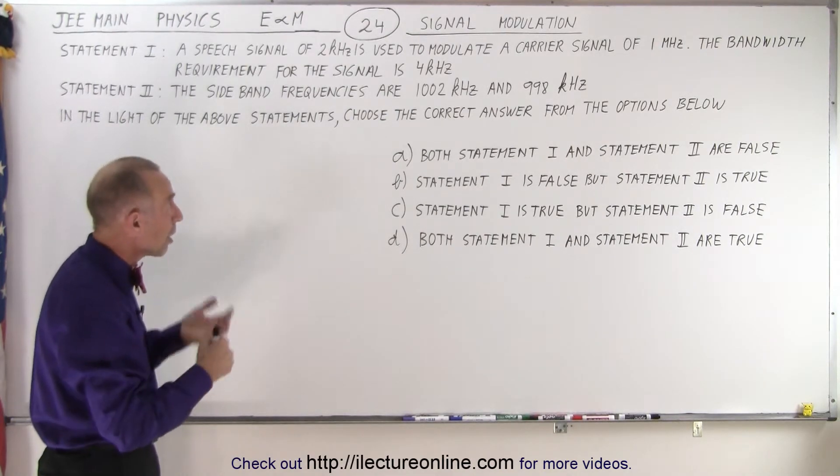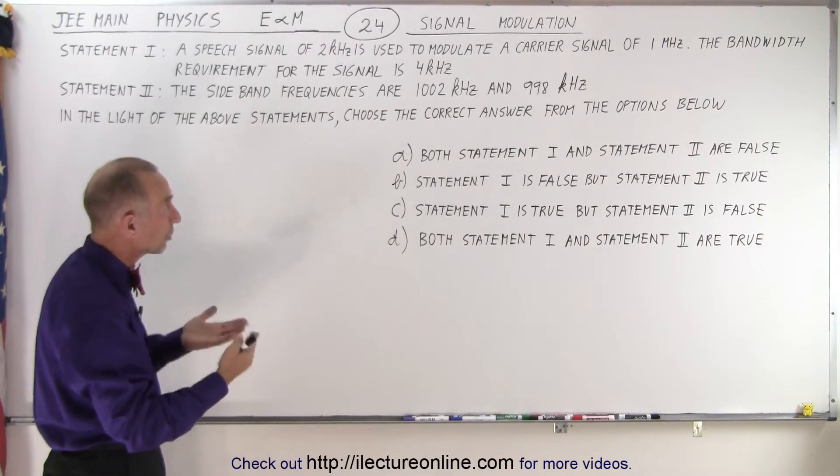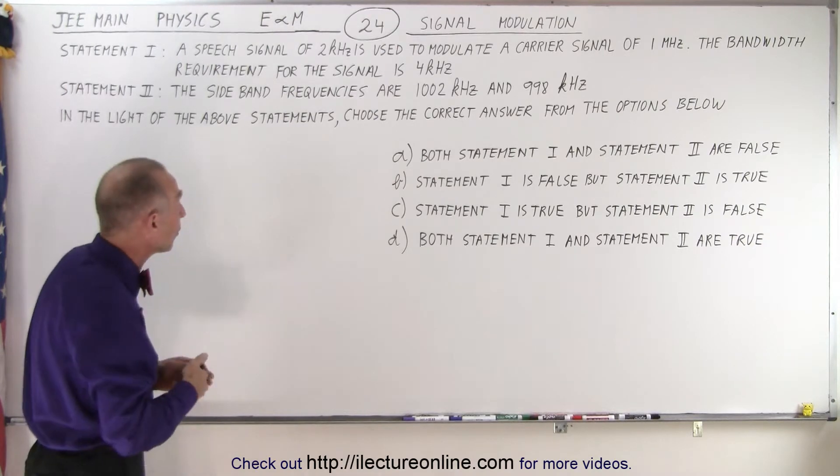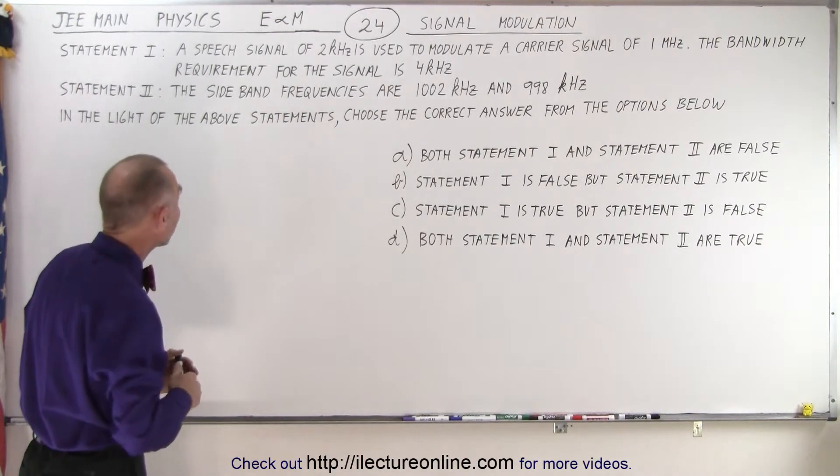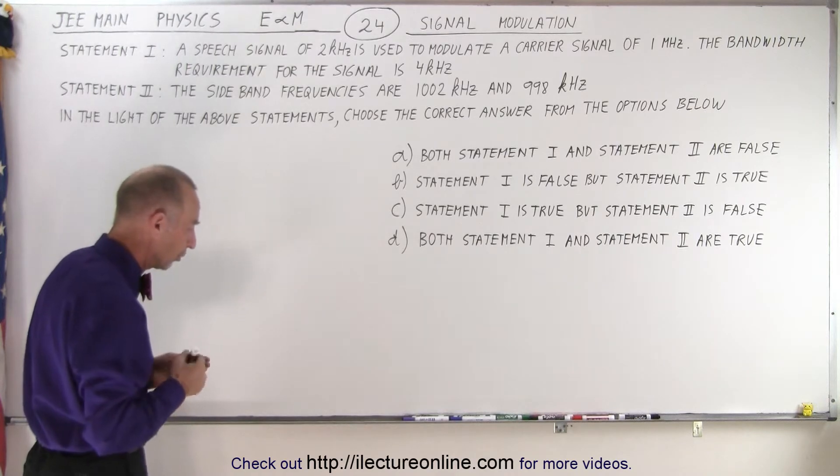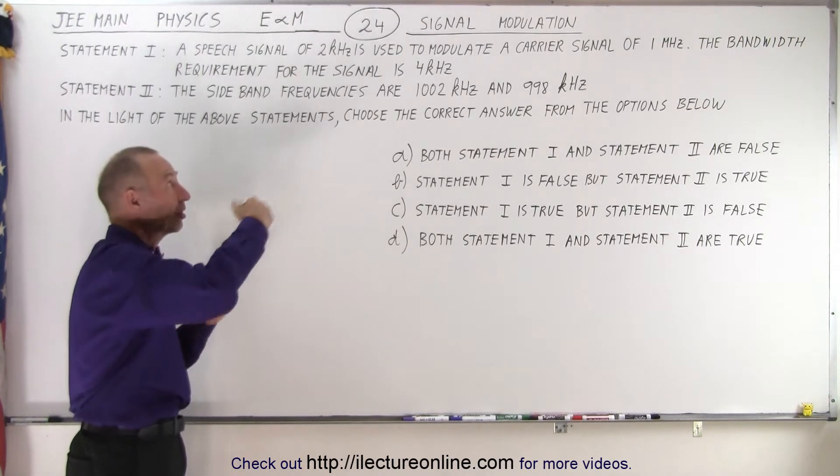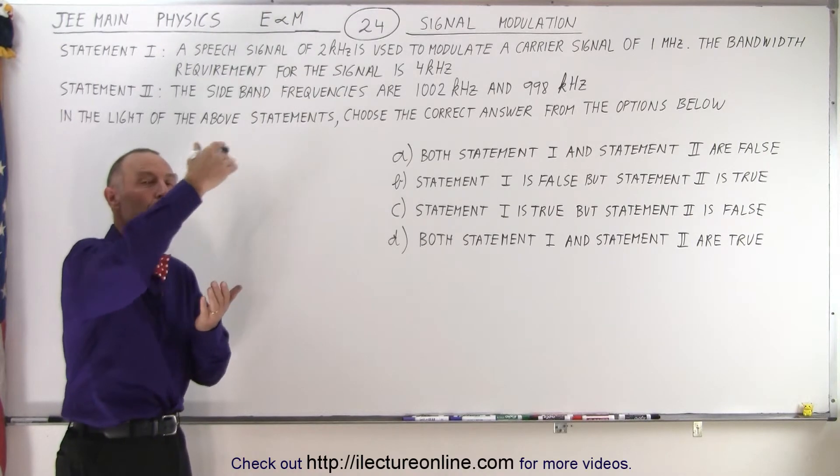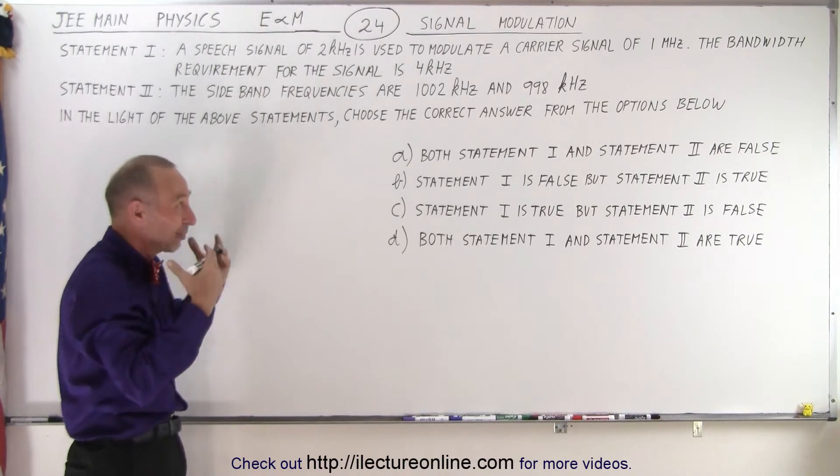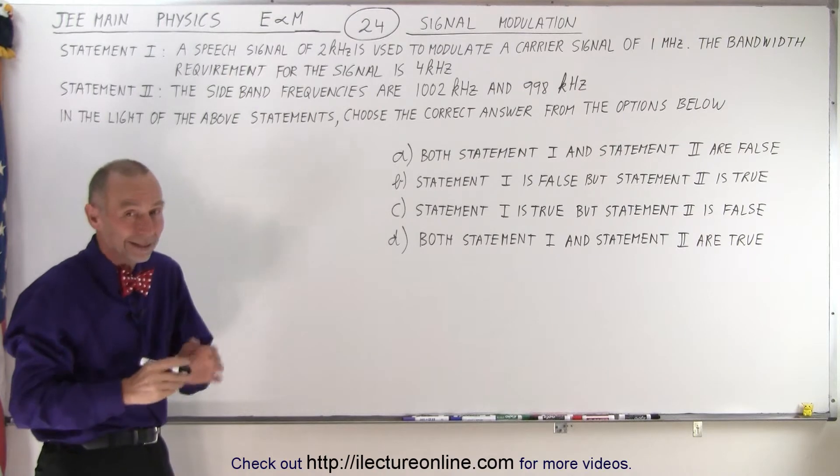Well, what kind of modulation is this? We have a carrier signal of 1 megahertz, and we superimpose upon that a speech signal of 2 kilohertz. Now, what that means is that we can go above the carrier signal by 2 kilohertz, or we can go below the signal by 2 kilohertz. So that's what you have to know and understand.